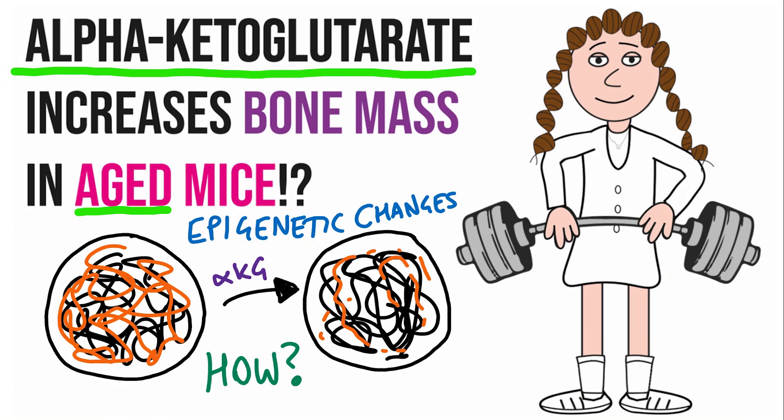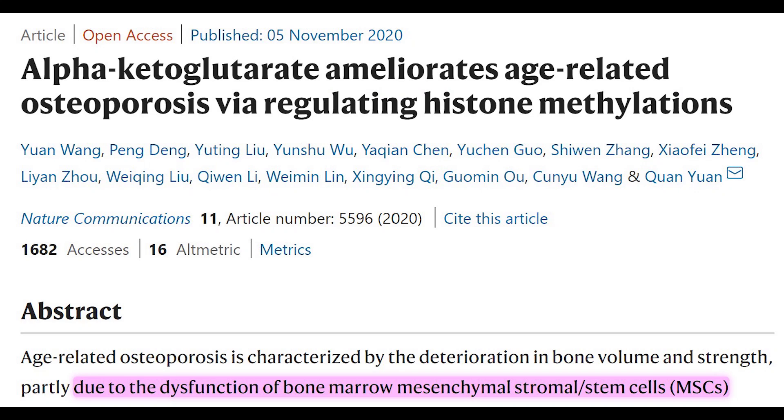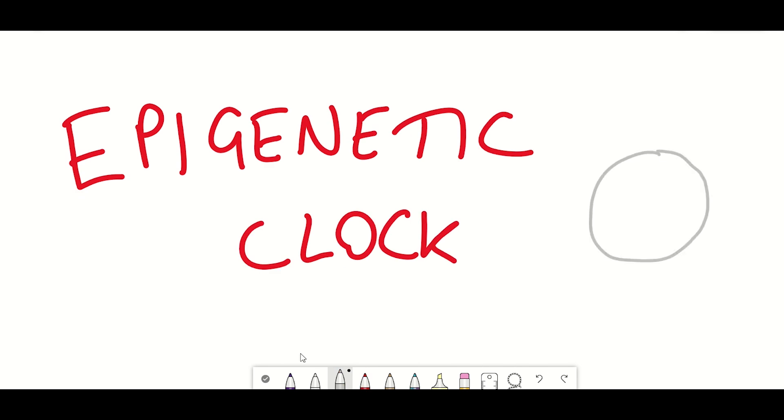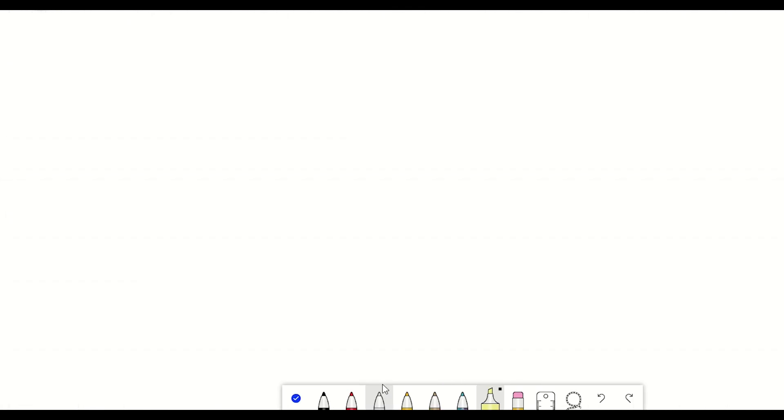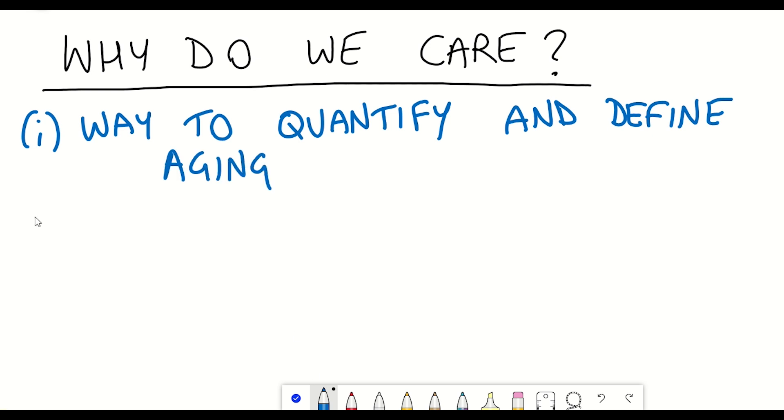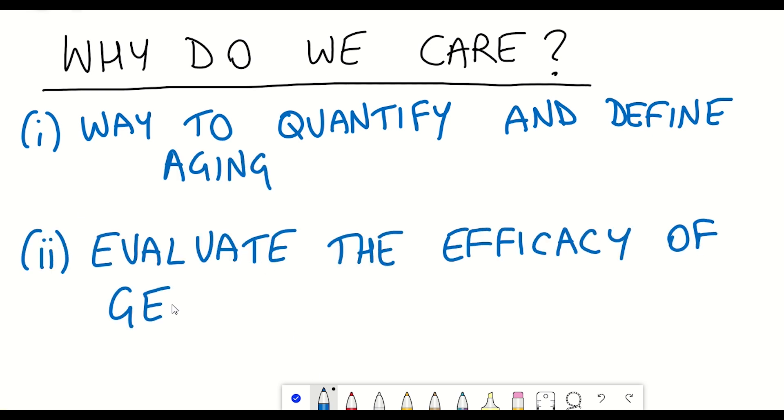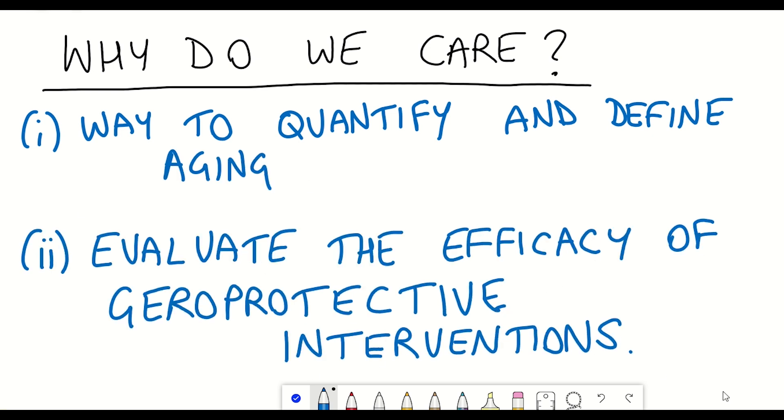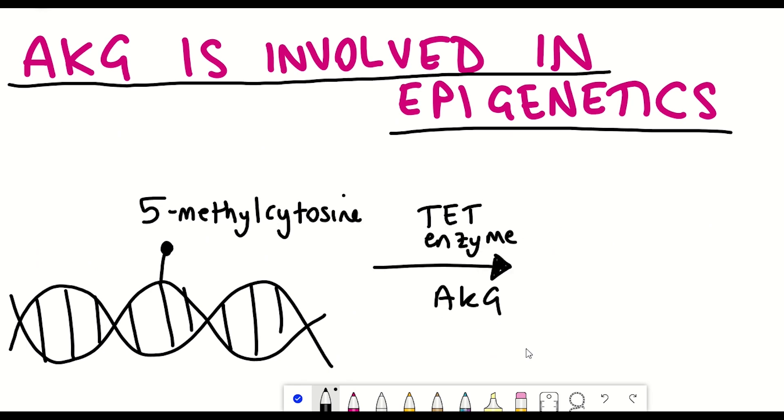Moreover, I more recently mentioned a study whereby AKG ameliorated age-related osteoporosis via regulating histone methylation. And so given that looking at epigenetic modifications seems to be one of the better ways of being able to determine biological age as an indication of whether or not anti-aging supplements are effective, it will definitely be interesting to see some DNA methylation data in regards to AKG treatment.